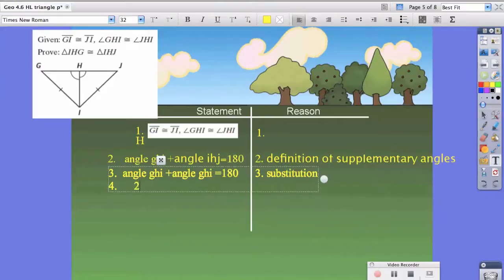Now we could say two times angle GHI equals 180 degrees, because of addition. Now we can say angle GHI equals 90, because of division.